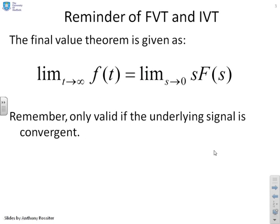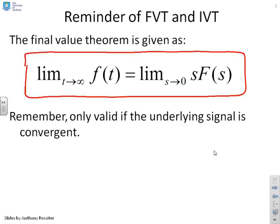First, a reminder of the final value theorem and the initial value theorem. The final value theorem states: the limit as t goes to infinity of f(t) is the limit as s goes to zero of s·F(s). A reminder that this is only valid if the underlying signal f(t) is convergent — clearly if there is no limit for f(t), there's no point applying the final value theorem. You will get rubbish.